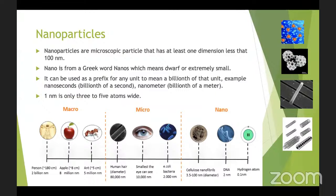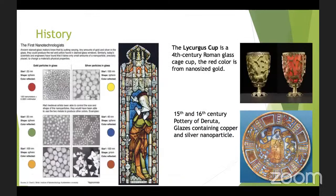Now you can correlate how small a nanometer is. A few examples of nanoparticles include sphere-like particles like buckyballs, gold nanoparticles, and silver nanoparticles. They also have rod-like particles like silicon or nickel nanowire, or tube-like particles such as carbon nanotube or titanium dioxide nanotubes, which are shown in the bottom right corner.